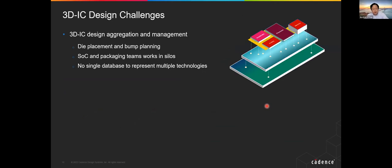Now I'd like to mention some design challenges. For 3D IC design, the aggregation and management — die placement and bump planning — will be critical for creating connections. One key challenge is that the SoC team and the package team previously worked pretty much separately. Even the language is different: one side says pin, port, terminal; the other side says bump, pad, pass, stack. That terminology brings confusion. Now those groups have to work together because everything converges. Database management is another challenge from the 3D design point of view.